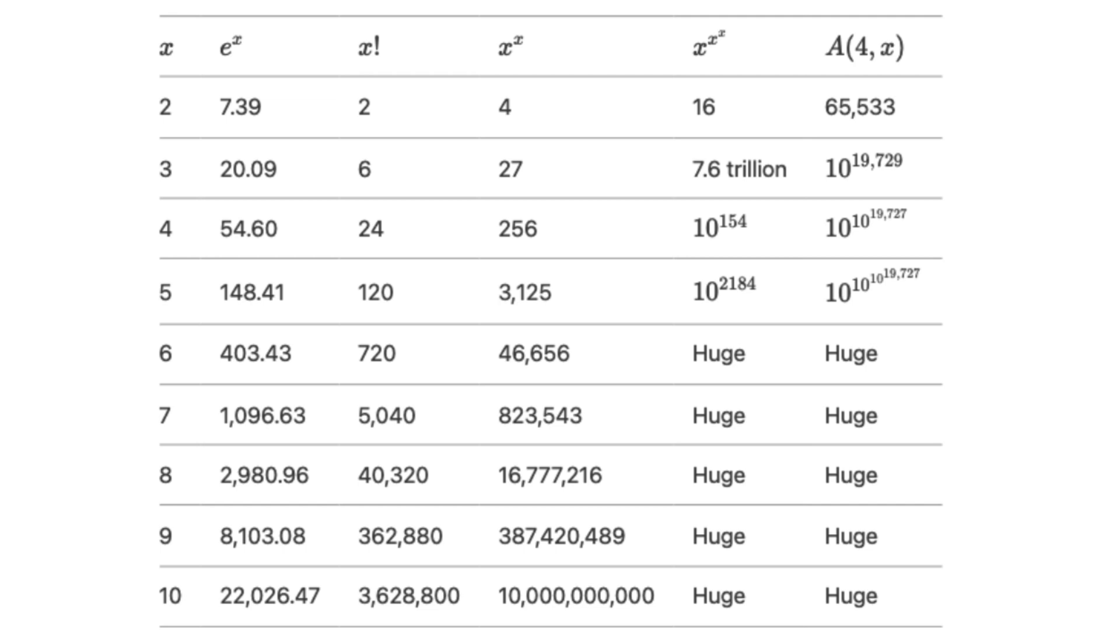Exponential, factorial, tetration of height 2 and 3, and now Ackermann function with m equals 4. As you can see from the values, Ackermann function grows extremely quickly.